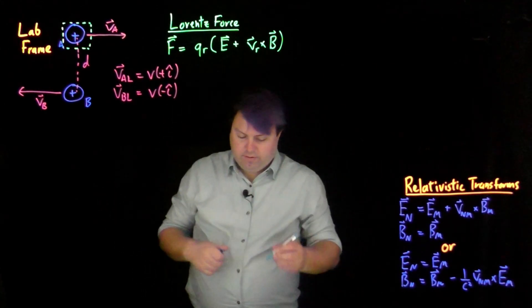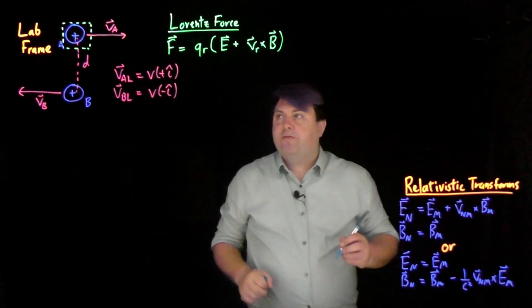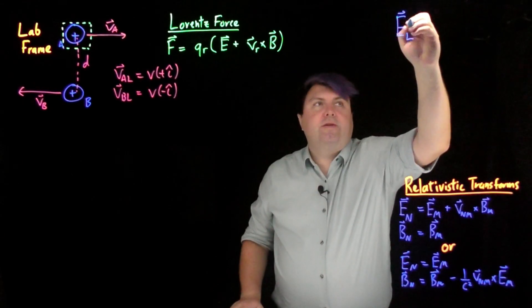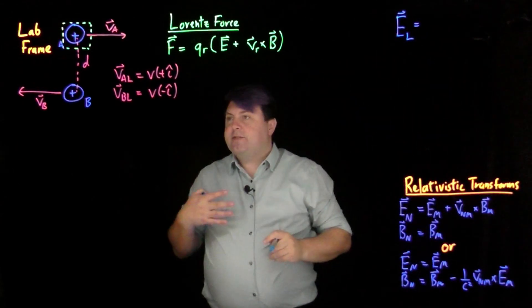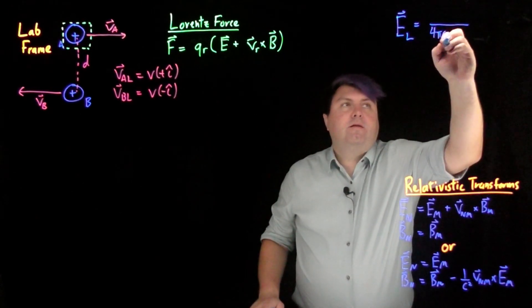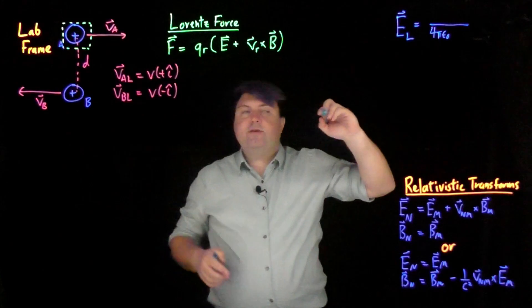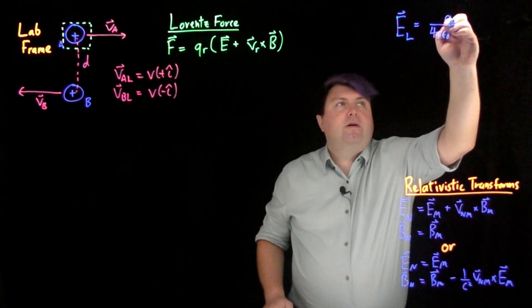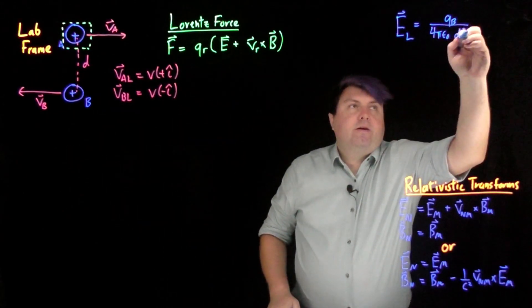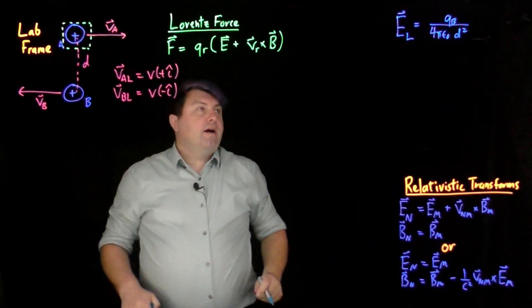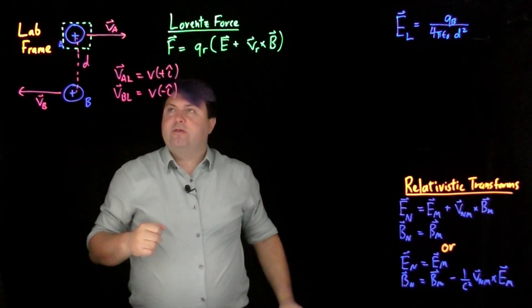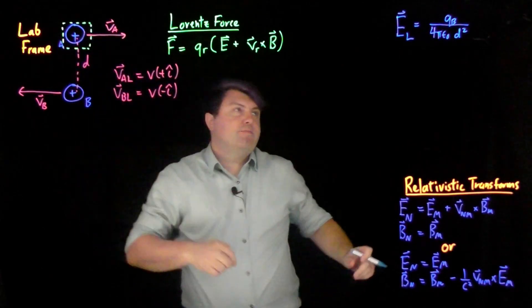The first thing we can do is find the electric field in our lab frame. We write this as E_L = (1 / 4πε₀) times the charge QB, divided by the distance squared D², and then R̂ is the direction from the source charge to the recipient, which is positive ĵ.